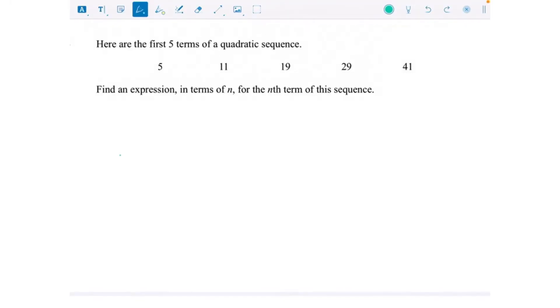This is how we would do the nth term of a quadratic sequence, so that's when the sequence is going to have n squared in its nth term. This is only on the higher paper, so if you're doing the higher paper have a watch, but if you're doing foundation don't worry about this.